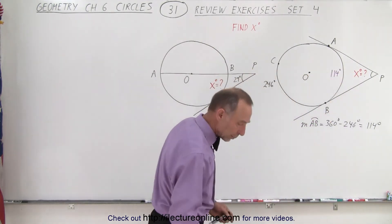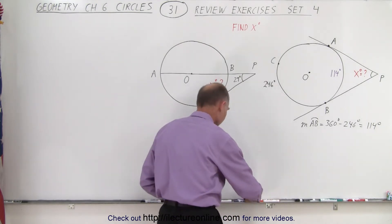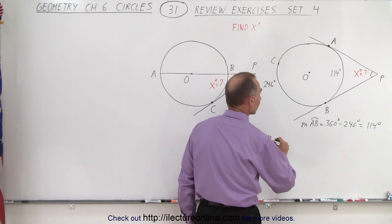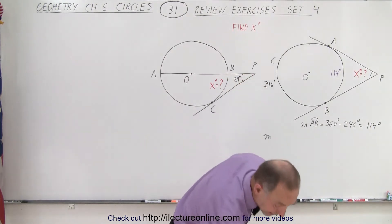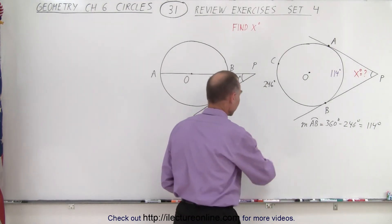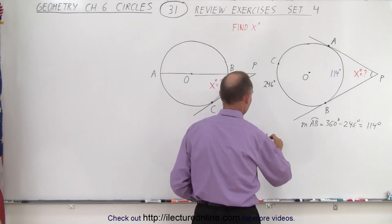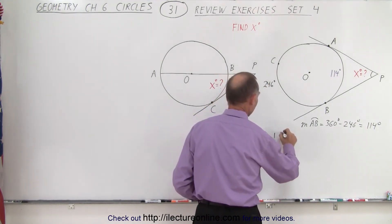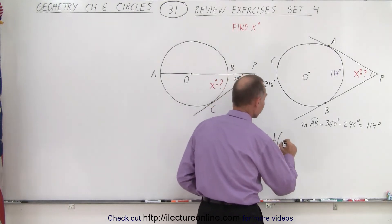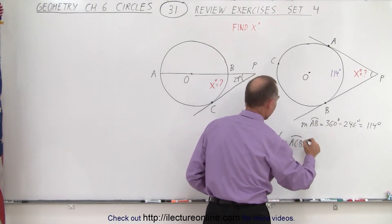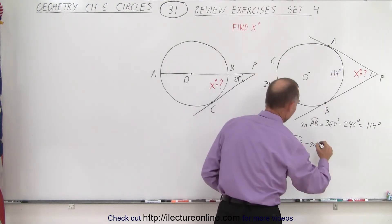Alright. And we can also say, well I'll keep that here, we can also say that the measure, well actually I can just write the x value, that makes it easier. So let's do that. So the value for x is equal to one half the arc length of the outside arc, so we can say the measure from A to C to B minus the measure on the inside from A to B.